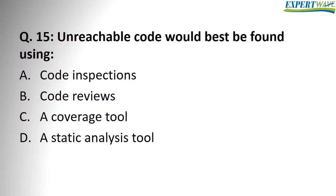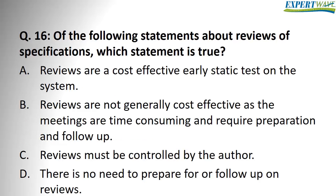Question number 15: Unreachable code would best be found using code inspections or code reviews, a coverage tool, or a static analysis tool? This is an easy one. A static analysis tool can find unreachable code — it determines which parts of the code will never be executed no matter what data input is tried. Code inspections and reviews could help but would be very difficult for reviewers. A coverage tool just measures a coverage percentage.